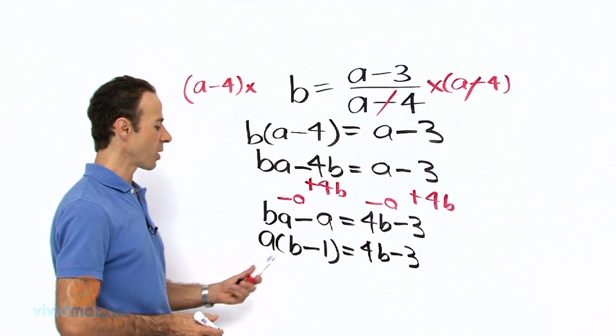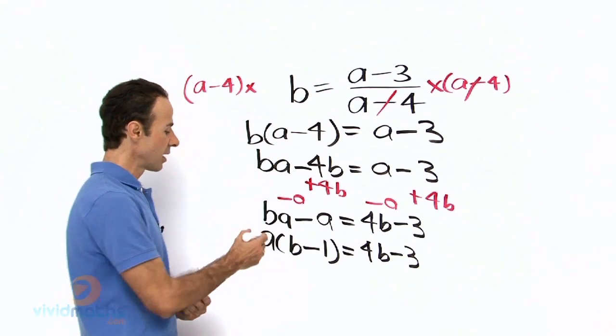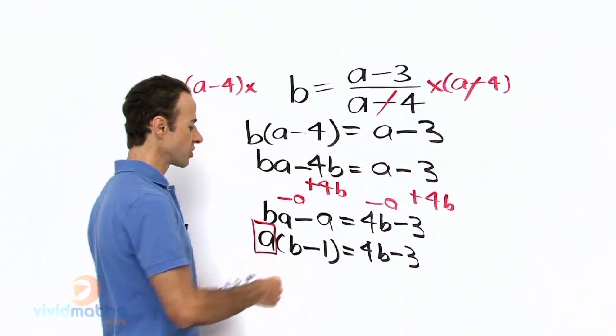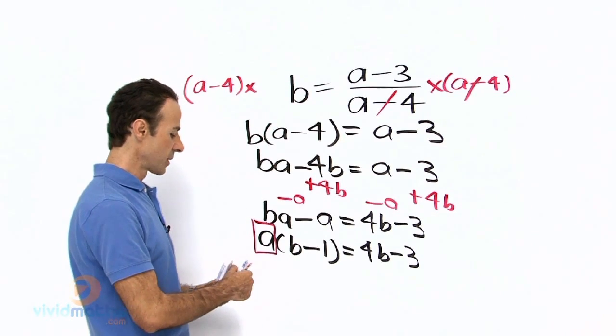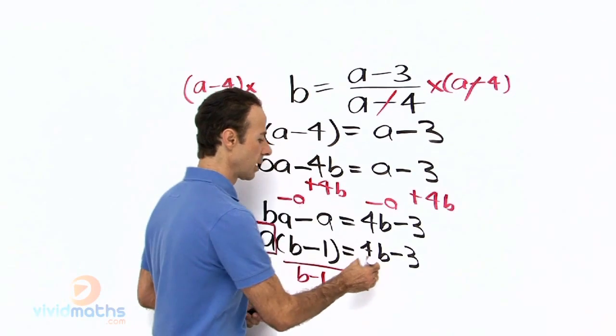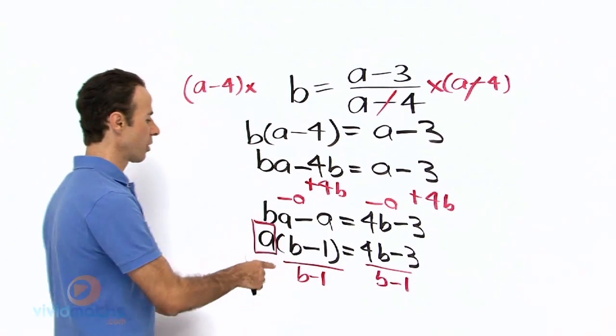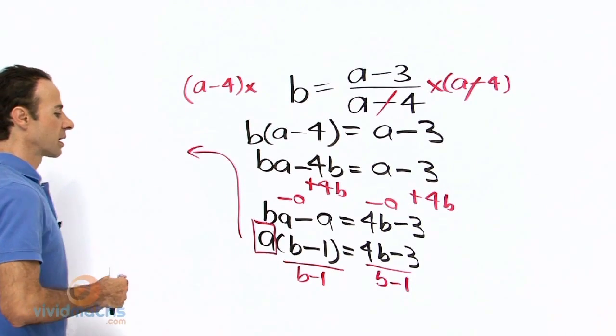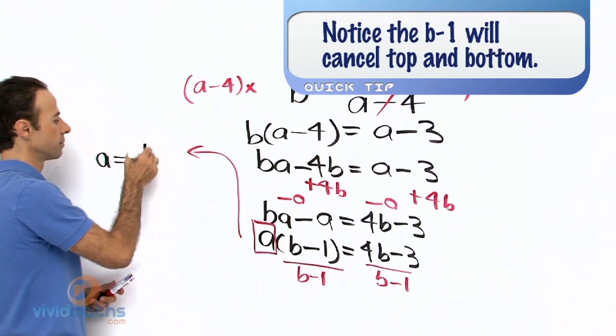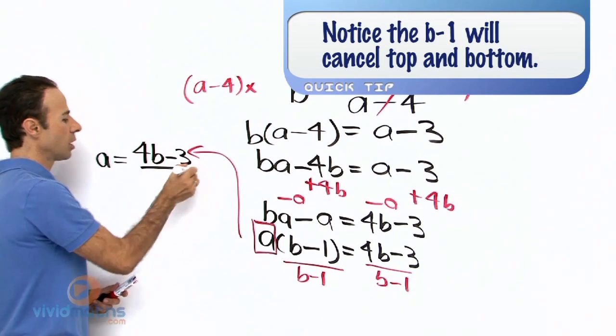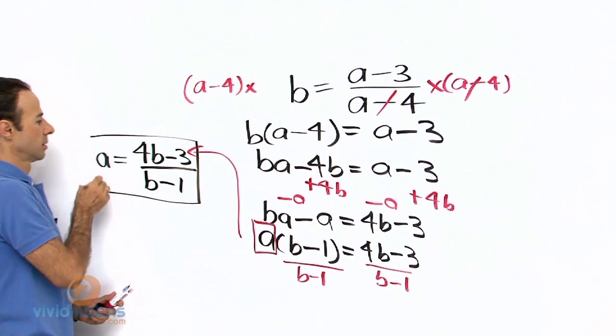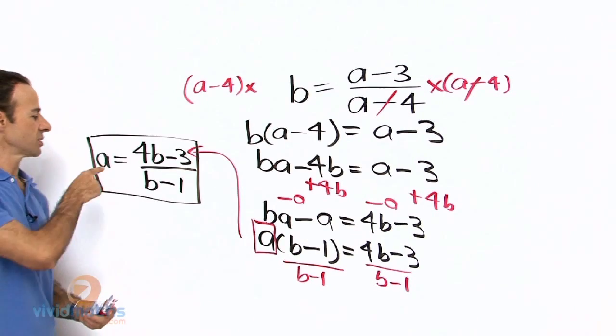Let us divide both sides by B minus 1, and that will make this A the subject, which is the outcome of this exercise. So we are dividing by B minus 1, and if we write it up here, it will become A equals, and on the top we have 4B minus 3 all over, and the B minus 1 stays there. And that is our answer, A is the subject.